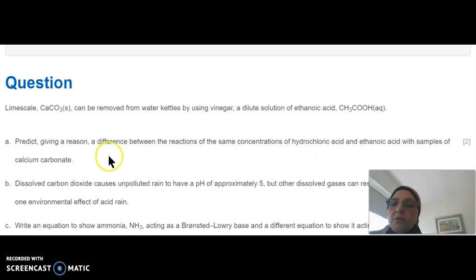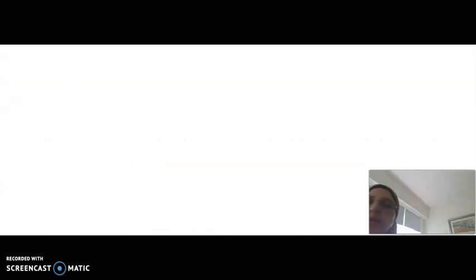Now, let's solve this problem. Lime scale calcium carbonate can be removed from water systems by using vinegar, the solution of ethanoic acid. Predict, giving reasons, the difference between the reaction of the same concentration of hydrochloric acid and ethanoic acid with samples of calcium carbonate. Comparing, you know ethanoic acid can be considered as a weak acid.